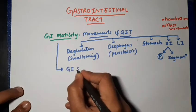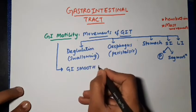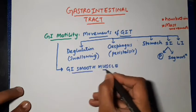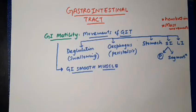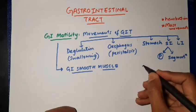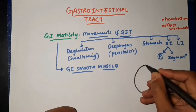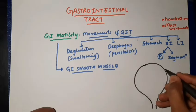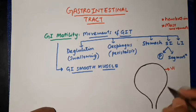Gastrointestinal motility is because of gastrointestinal smooth muscle — the smooth muscle present in the GI wall is responsible for movements of the GIT. We should have some idea about the location and type of this GI smooth muscle. If we take a cross-section of the alimentary canal at any level, surrounding the wall of the alimentary canal we find distinct muscle layers.